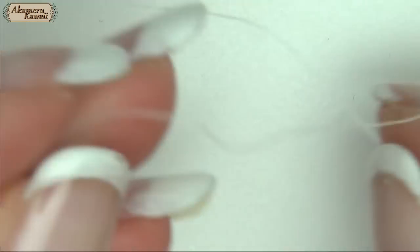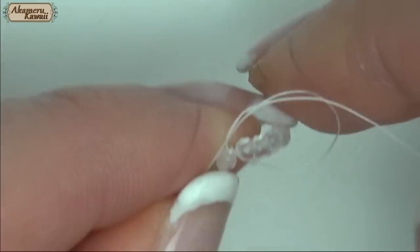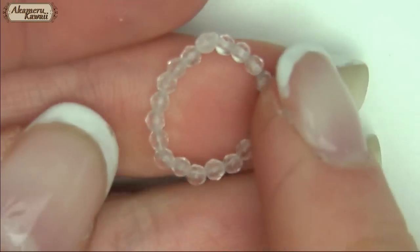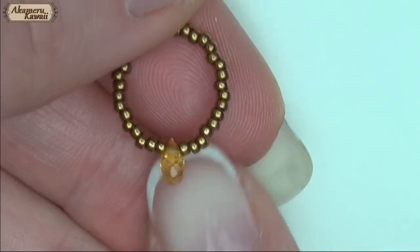When you have the length you need, tie the ends and cut away excess. You can make different styles by changing your choice of beads. Size 15 seed beads are good for this too.